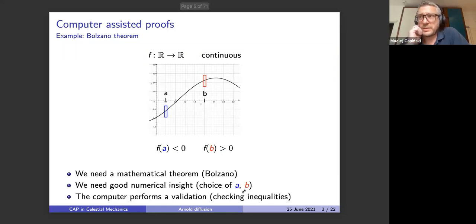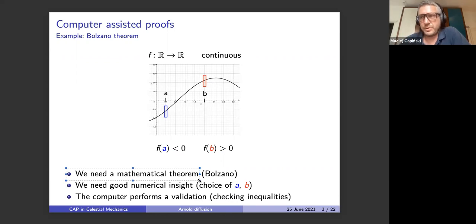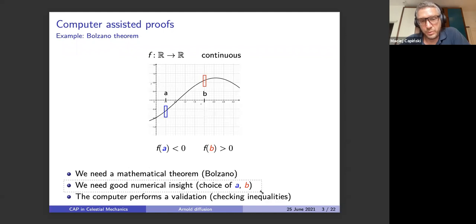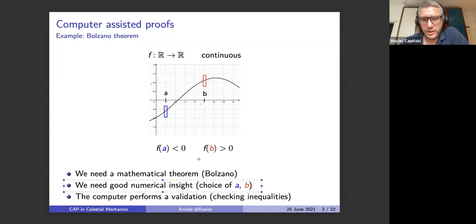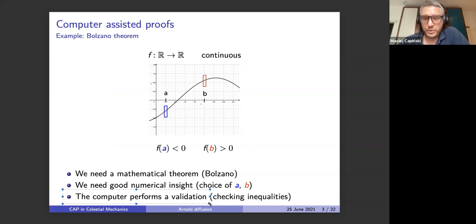This nicely demonstrates the ideology of computer-assisted proofs. You need a good mathematical theorem first — a contraction mapping principle or some geometric argument, in our case the Bolzano theorem. Second, you need numerical insight about the system, usually from non-rigorous simulations. In this case we make numerical tests: f(a) < 0, f(b) > 0, we know where a and b should be positioned. At the end you do the validation of the assumptions of your theorem with the aid of the computer — the computer is just a machine that checks certain inequalities.